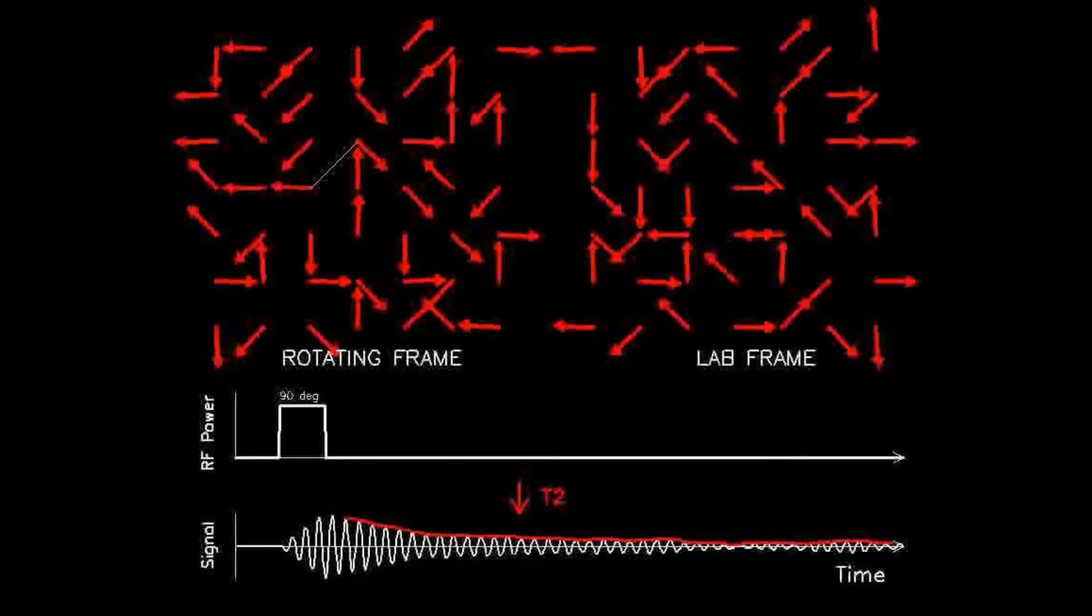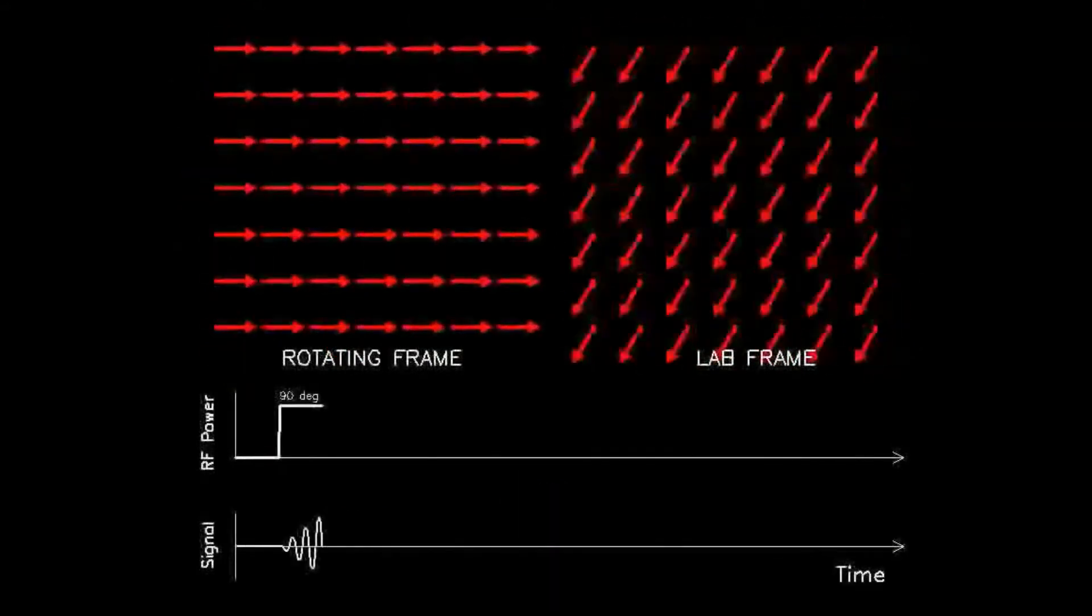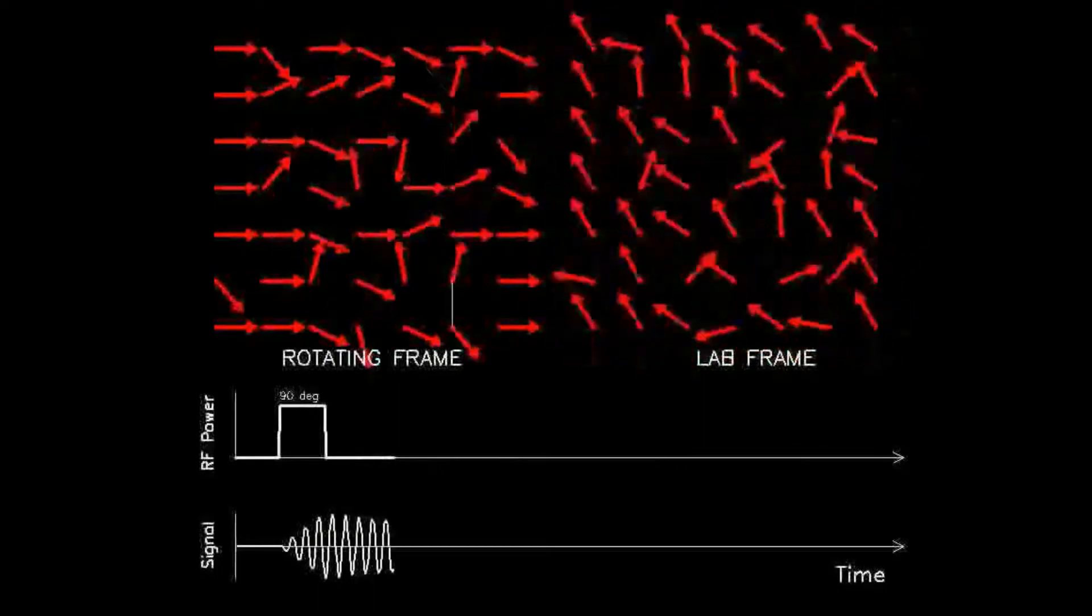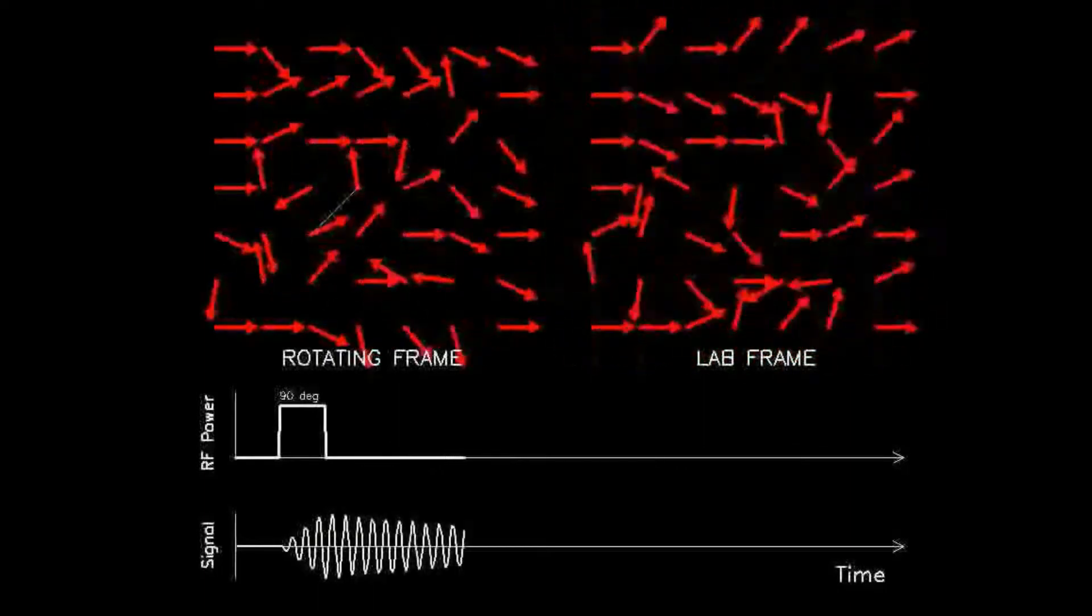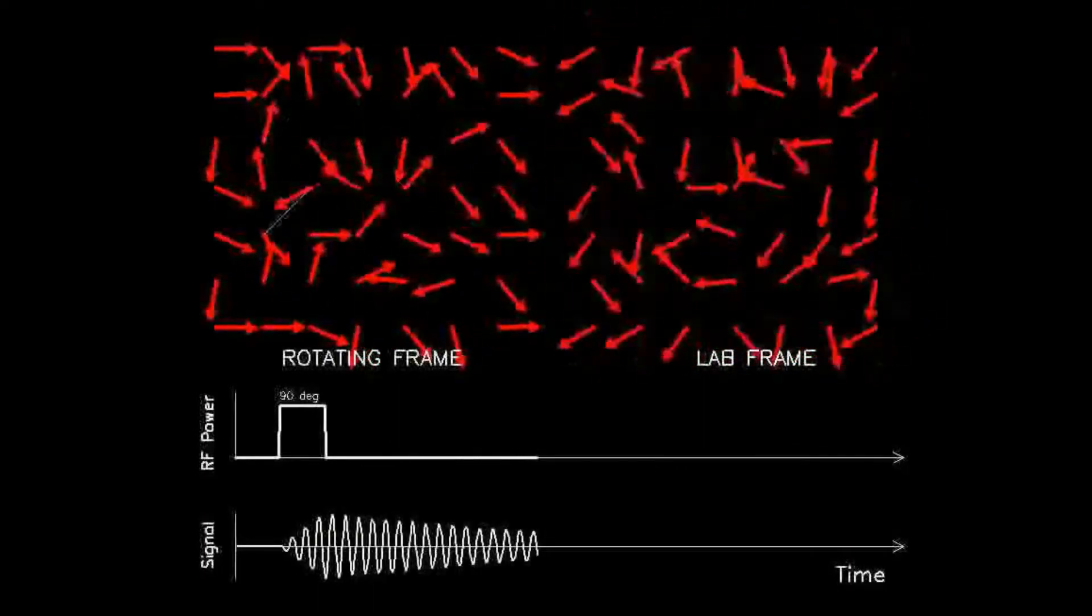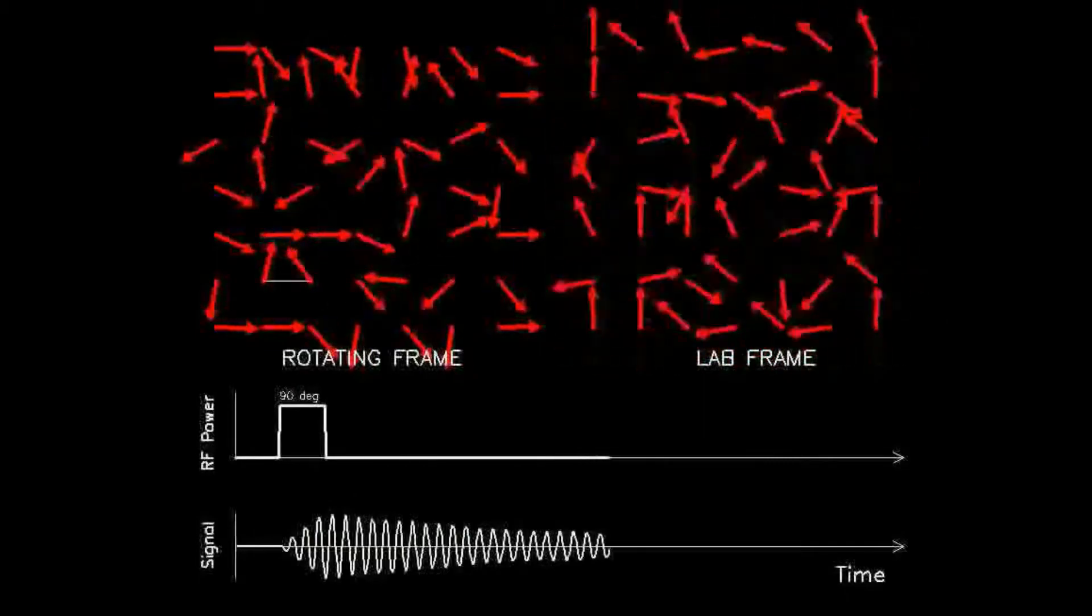Instead, each dipole randomly interacts with the neighboring dipole in the following crude model. The phase of one dipole is advanced by a small amount while the phase of a random adjacent dipole is retarded by the same amount.